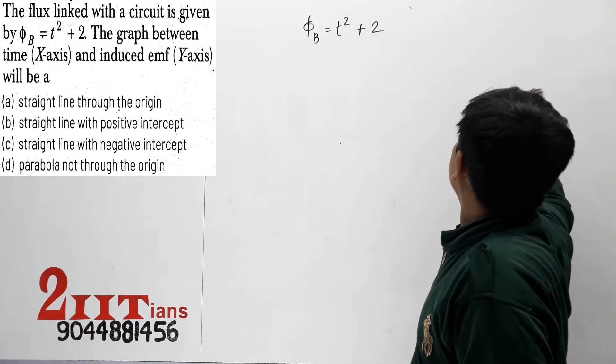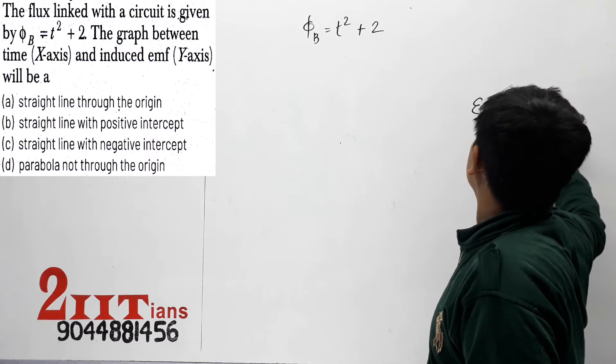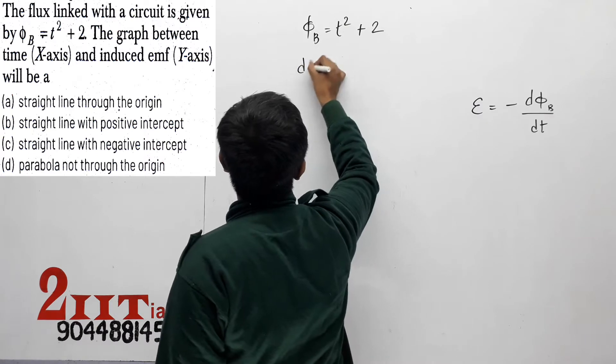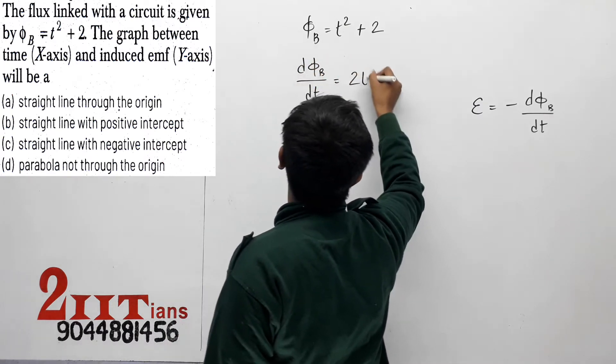Induced EMF is minus dφ_B by dt. So you can take dφ_B by dt and differentiate with respect to time.